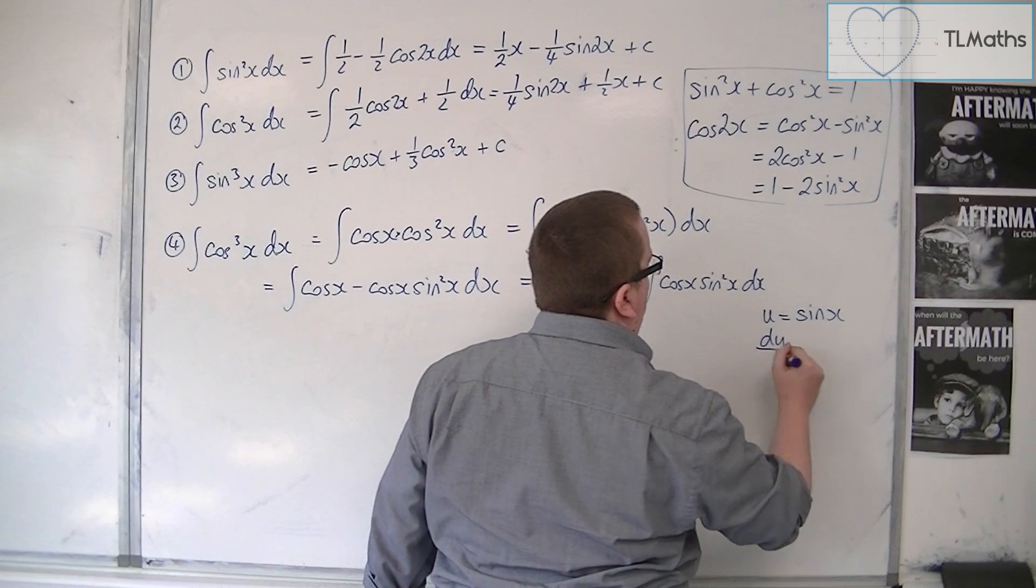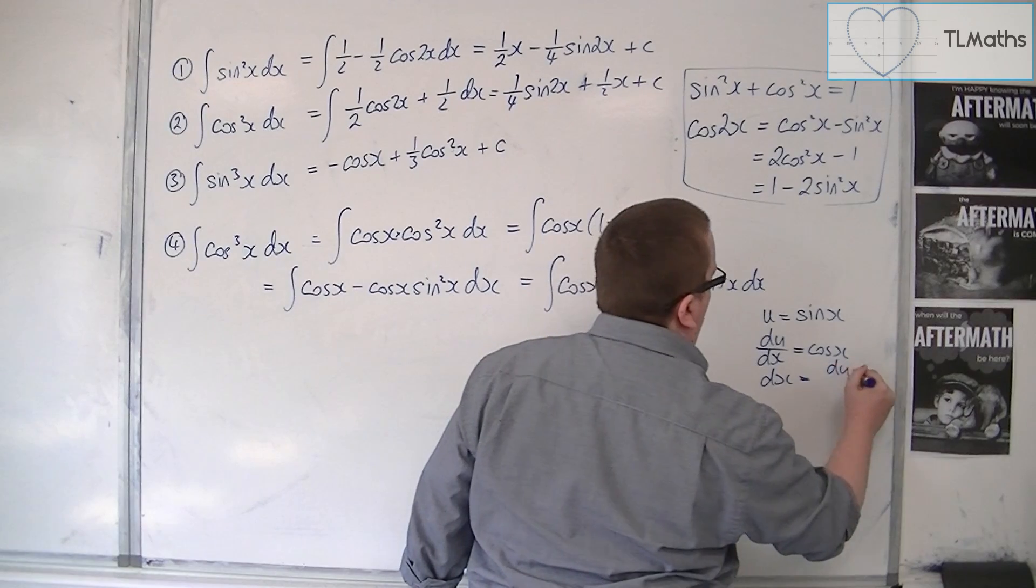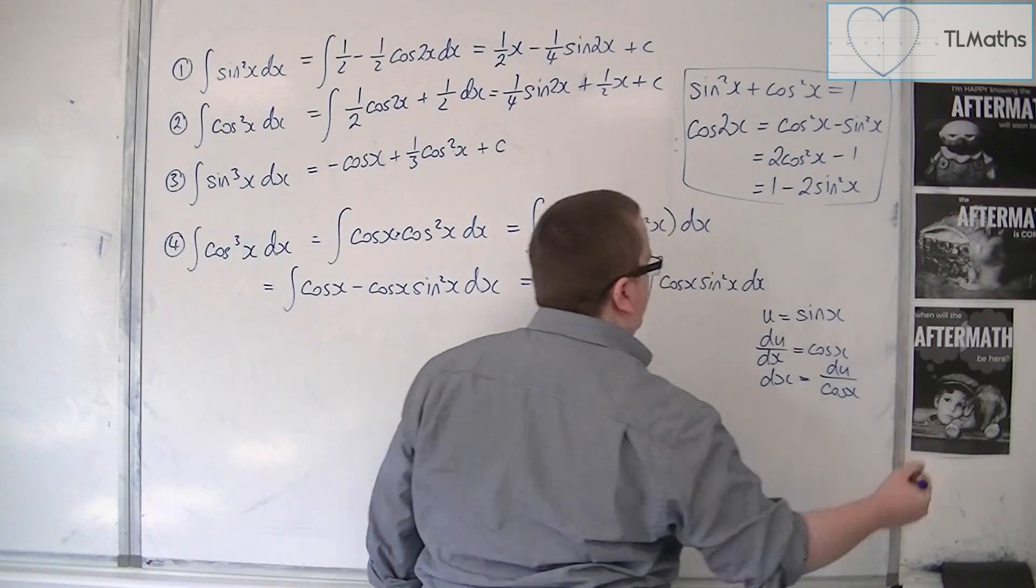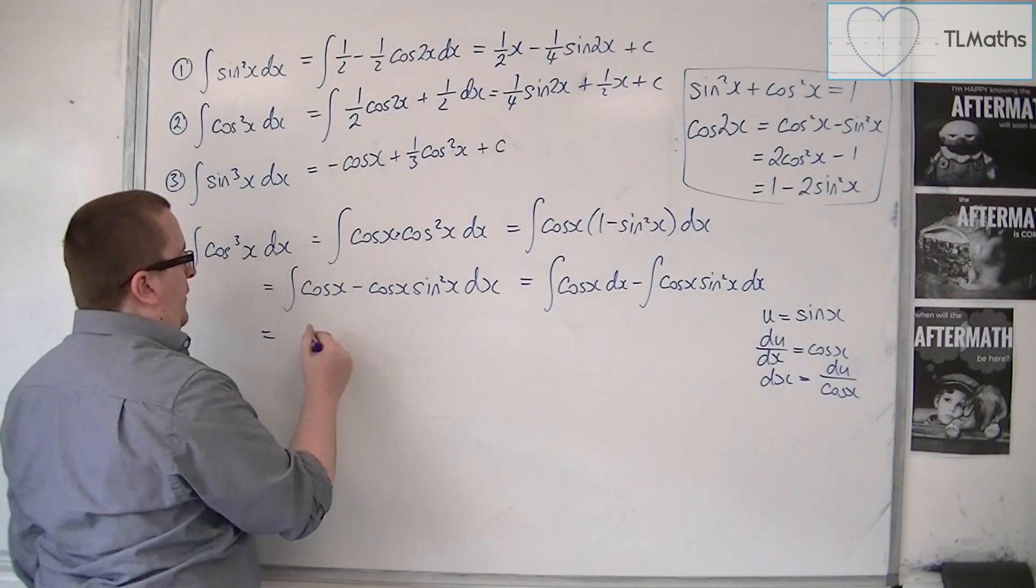So du by dx is cosx. So dx is du over cosine of x. So we have the integral of cosx is sine x.